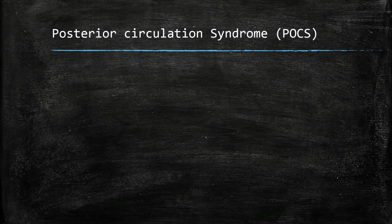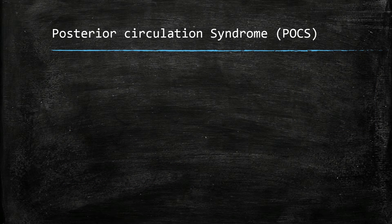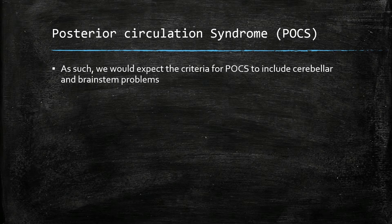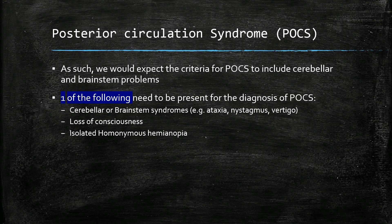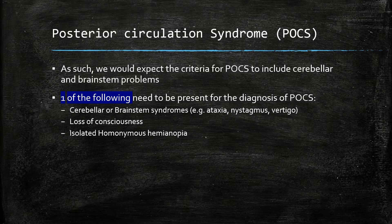As such, we would expect the criteria for POCS to include cerebellar and brainstem problems. One of the following needs to be present in order to make a diagnosis of POCS: cerebellar or brainstem syndrome such as ataxia, nystagmus, vertigo, loss of consciousness, or isolated homonymous hemianopia.